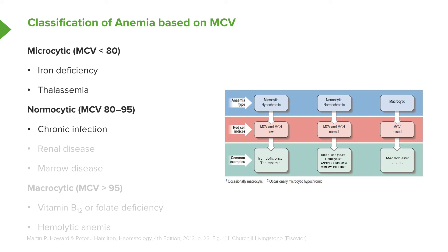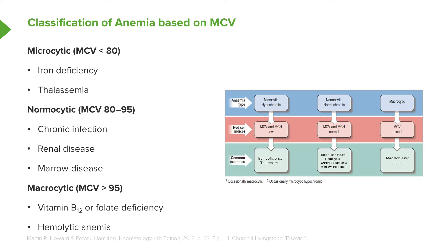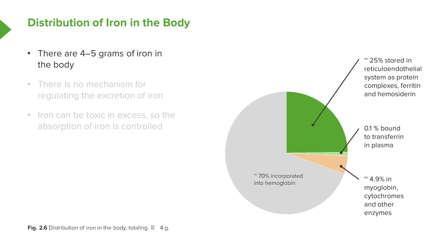In the middle we have normal sized cells — normocytic and normochromic. These are due to chronic infection, renal disease, and marrow disease, and may also include hemolytic anemia. Whereas on the right we have macrocytic anemia — large red cells with a raised MCV. We'll see later on how these are normally secondary to vitamin deficiencies, particularly vitamin B12 and folate deficiency.